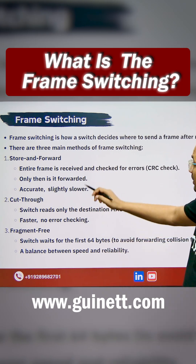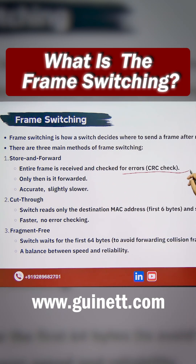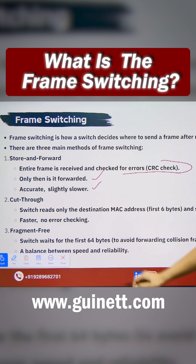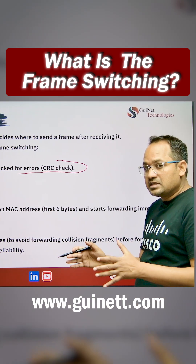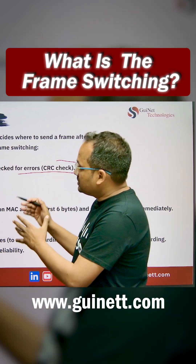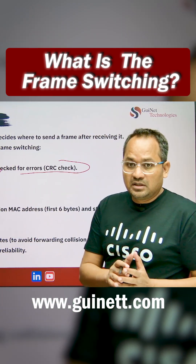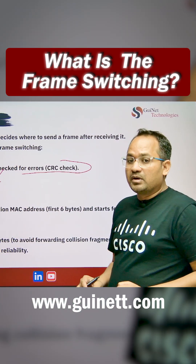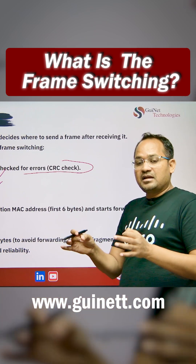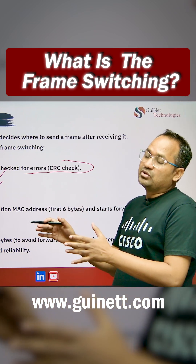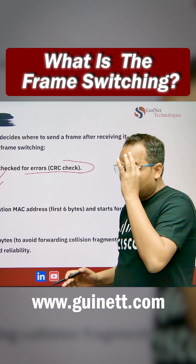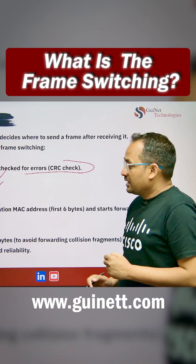In Store and Forward, the entire frame received is checked for errors — CRC is checked — and only then it is forwarded. It is accurate but slightly slower. The switch stores the frame, performs the CRC process, and if everything is fine, it forwards it to the destination. The process is slow because the switch stores, checks CRC, and only then forwards.